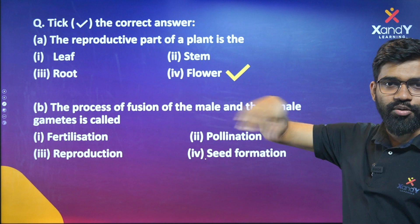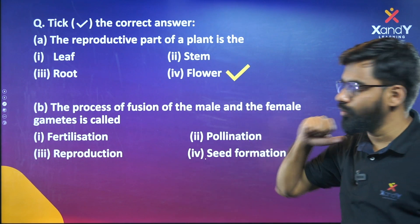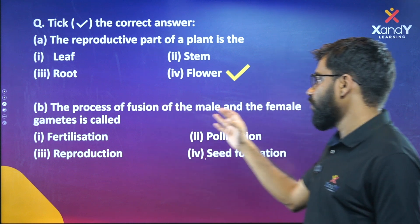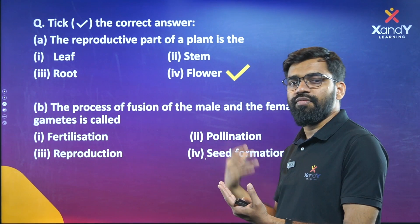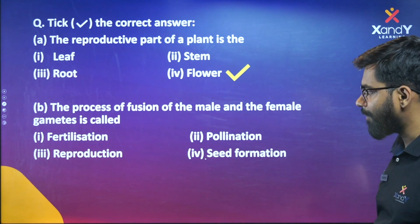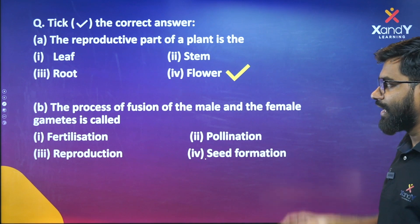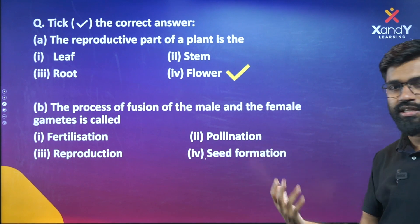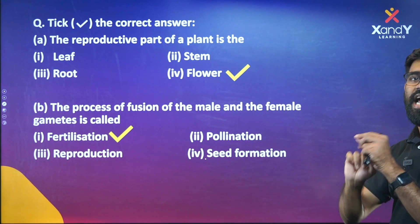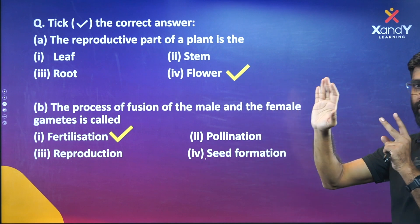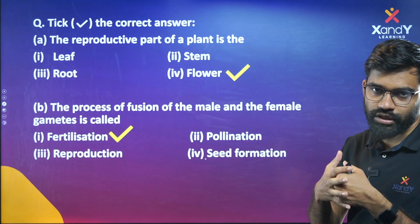What is the reproductive part? Vegetative Propagation. The process of fusion of male and female gametes — options are: fertilization, pollination, reproduction, seed formation. Obviously, fertilization. Pollination means transfer of pollen grains; fertilization means fusion of male and female gametes.